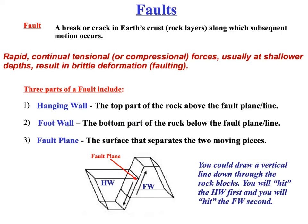When rocks actually fault, we need to consider what type of fault it is. To do that, we need to know the terminology: hanging wall and foot wall. Typically, we take a vertical line and draw it down through both blocks over the fault line. This terminology comes from miners — a miner would walk on the foot wall and hang their lantern on the hanging wall. The hanging wall typically sits on top and the foot wall sits on the bottom. When you draw your vertical line down, the block you hit first is your hanging wall and the block you hit second is your foot wall.